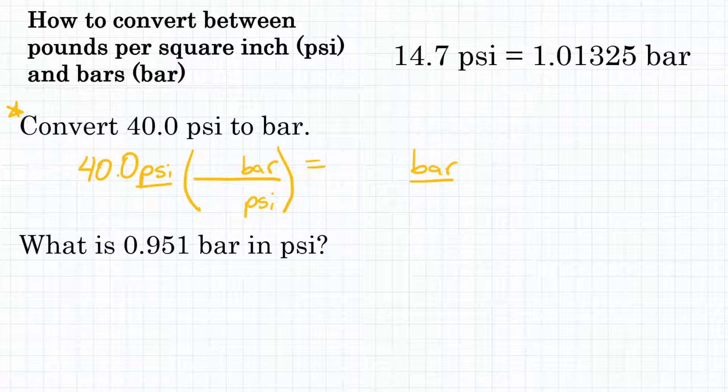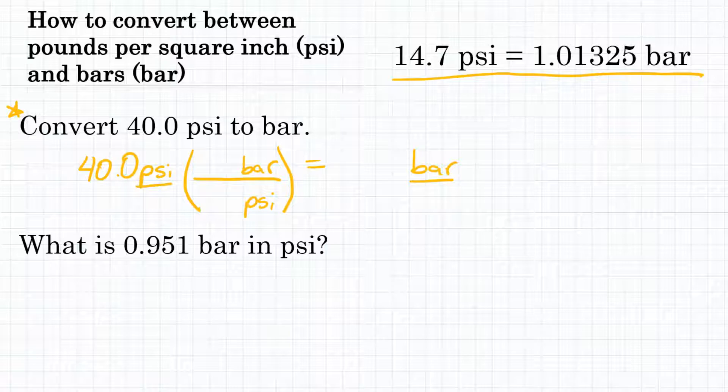Now what is the relationship between these two units? Well, 14.7 PSI is equal to 1.01325 bar. So that's what we're going to include with our respective units in our conversion factor. On the bottom where we have PSI, we'll have 14.7, and up top where we have bar, we will have 1.01325.